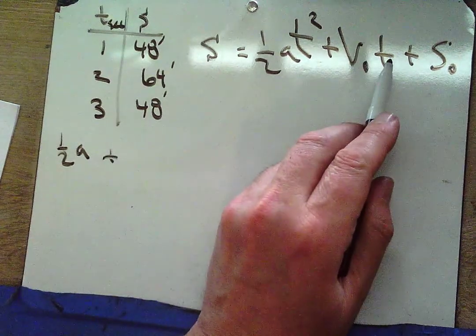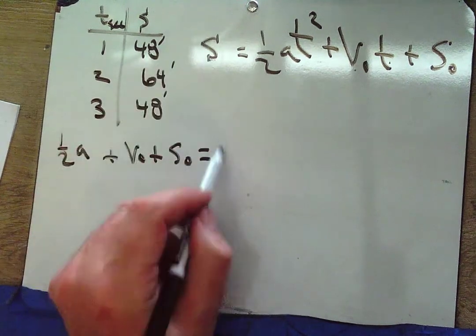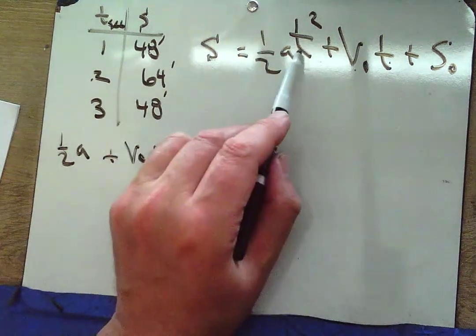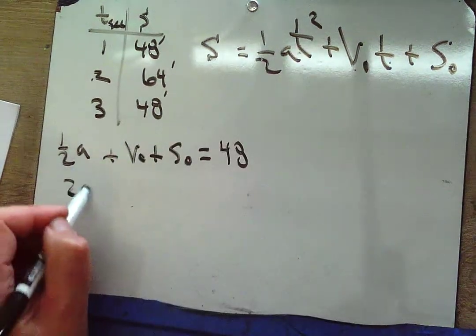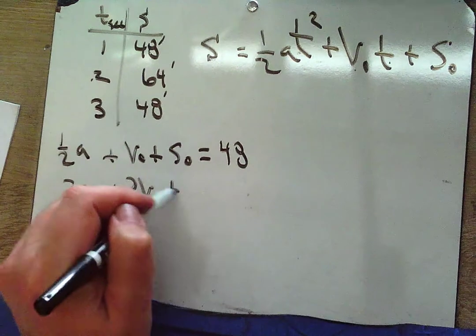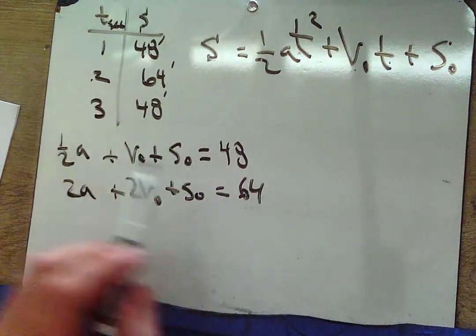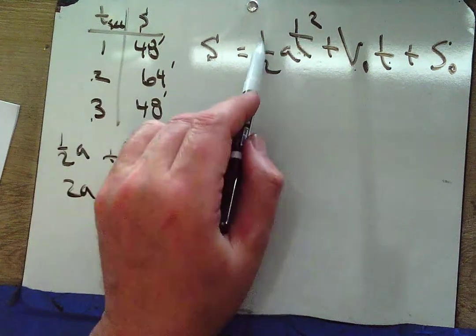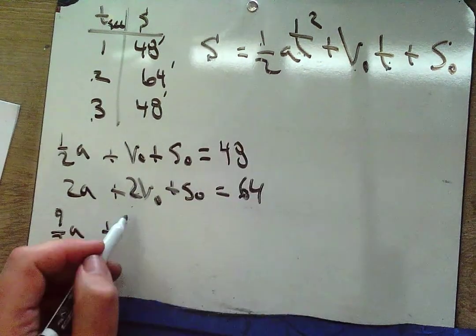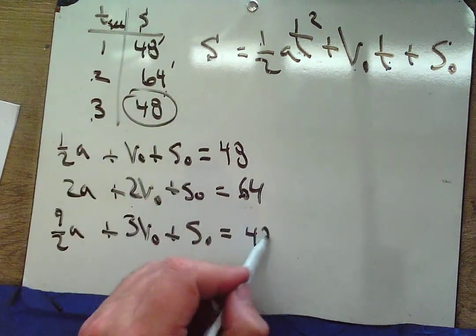Plugging in t=1: (1/2)a + v₀ + s₀ = 48. Plugging in t=2: 4·(1/2) = 2a, so 2a + 2v₀ + s₀ = 64. Plugging in t=3: (9/2)a + 3v₀ + s₀ = 48. There's my three-equation system to solve.